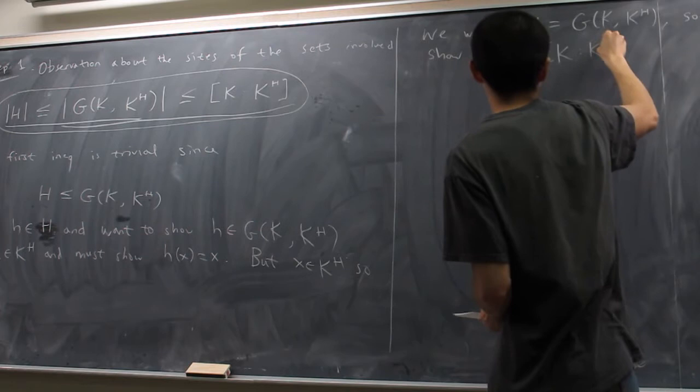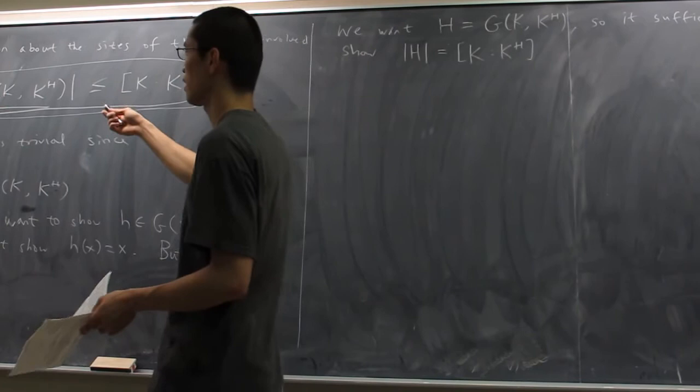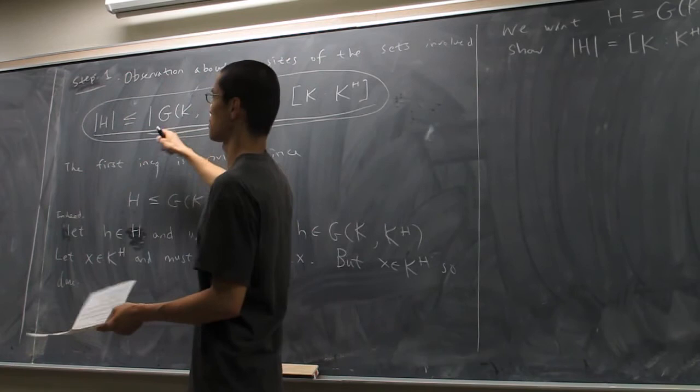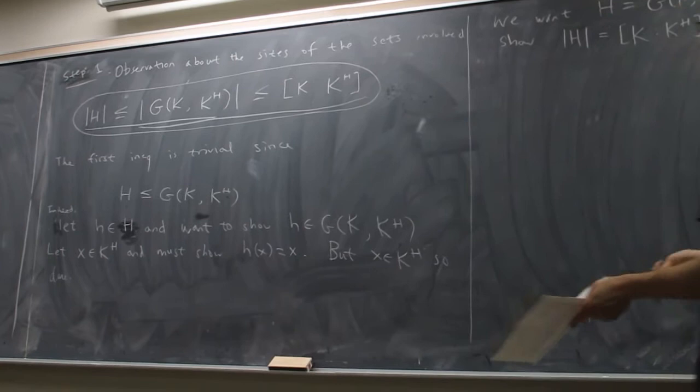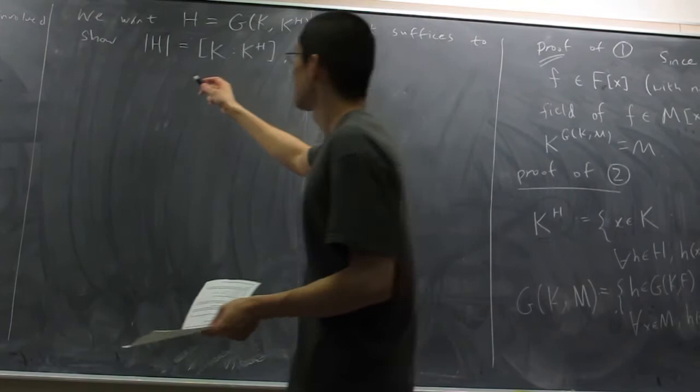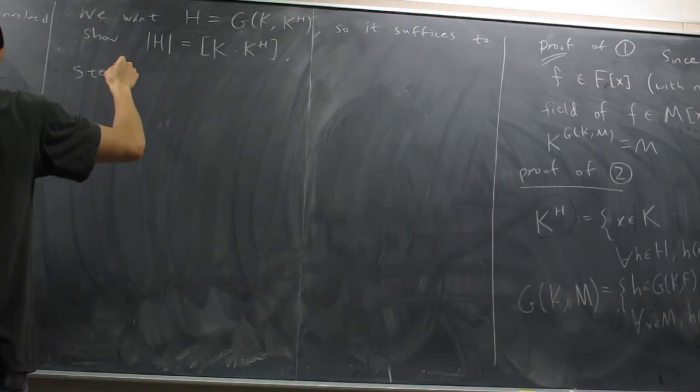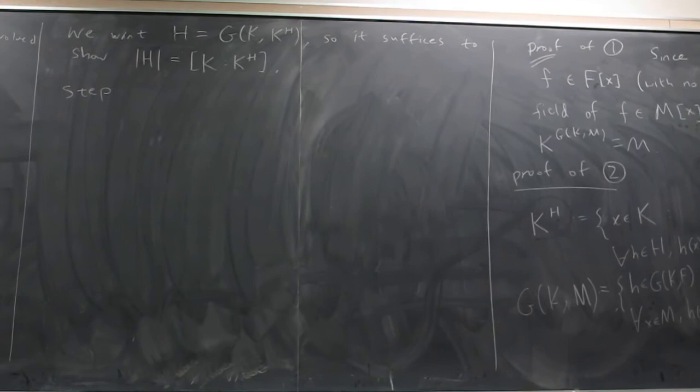With that debt assumed, we know |H| ≤ |G(K/K^H)| ≤ [K : K^H]. What we want to show is H equals the middle term. It suffices to show equal cardinality. Since H is a subgroup of G(K/K^H), if these have the same size they must be equal. We already have ≤, so we just need ≥. Step two is showing |G(K/K^H)| ≤ |H|.